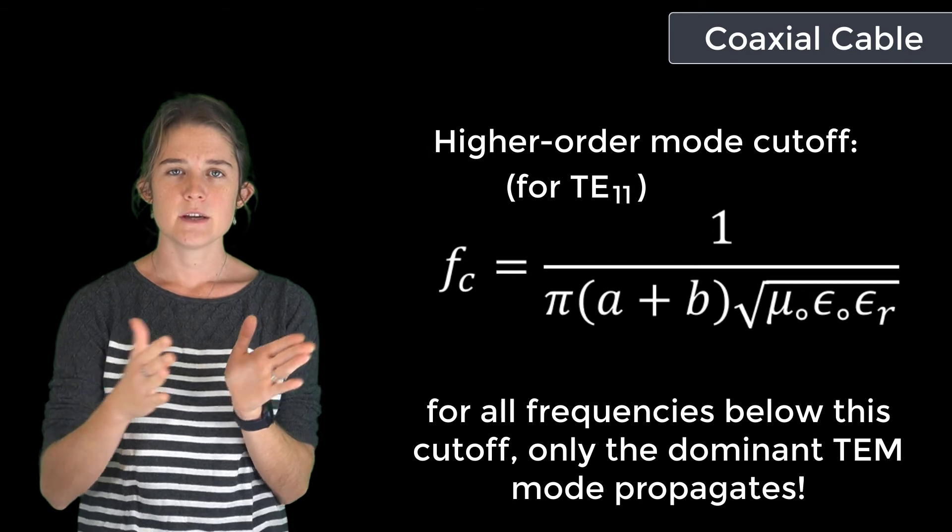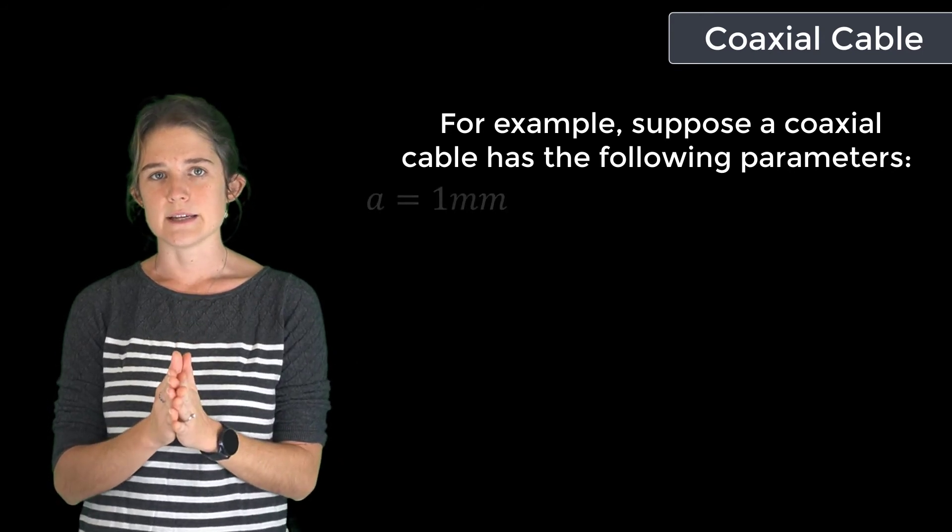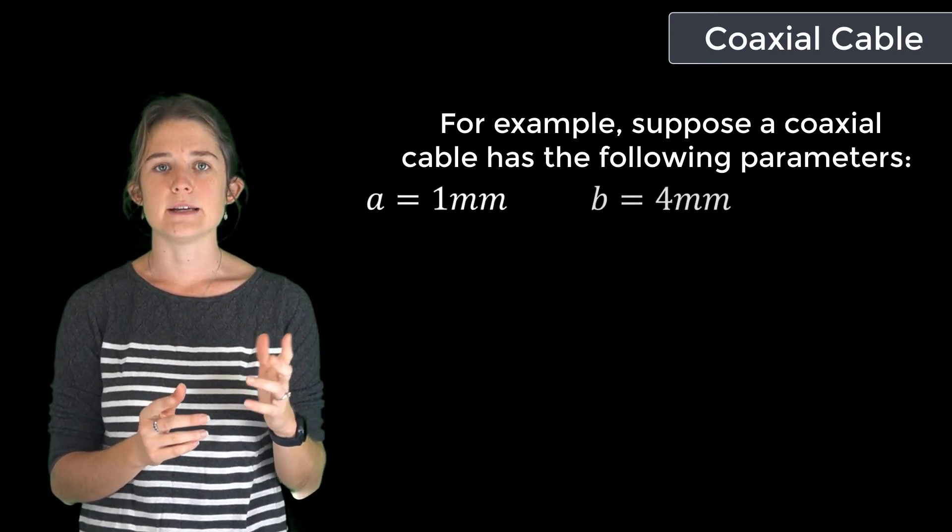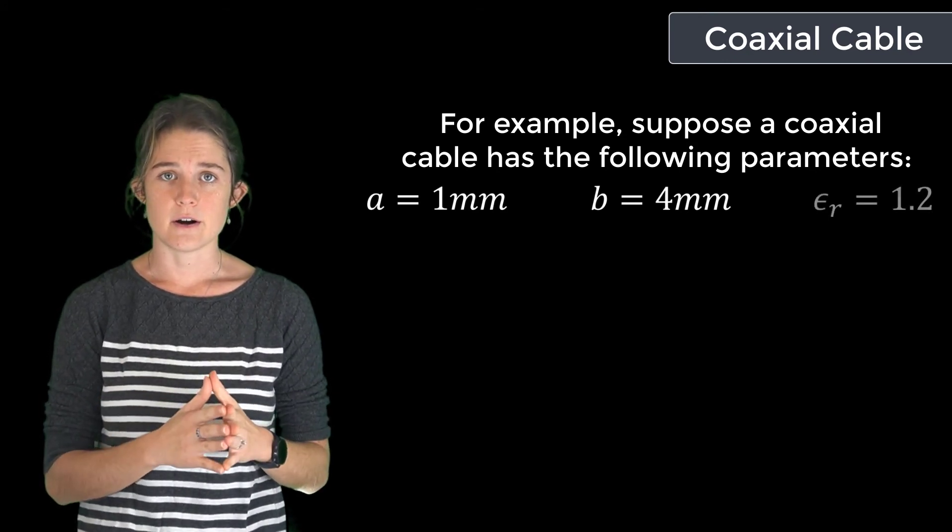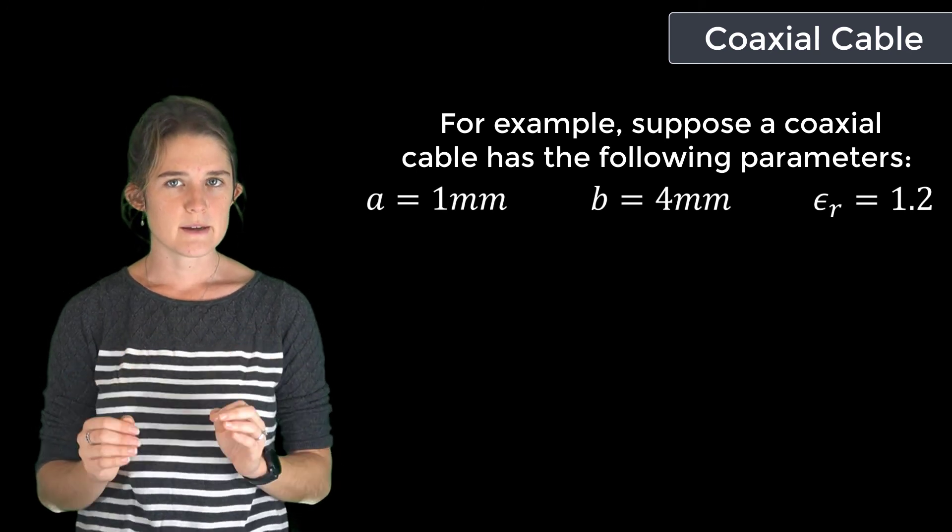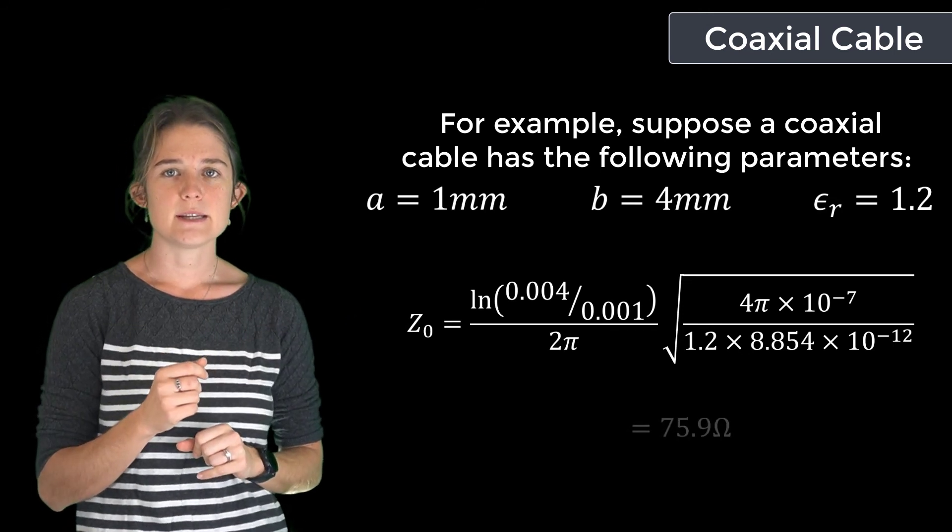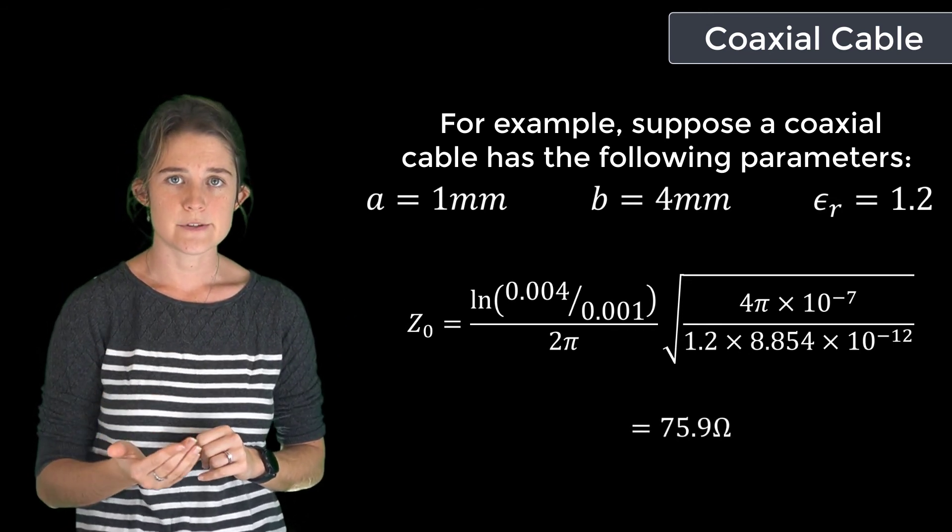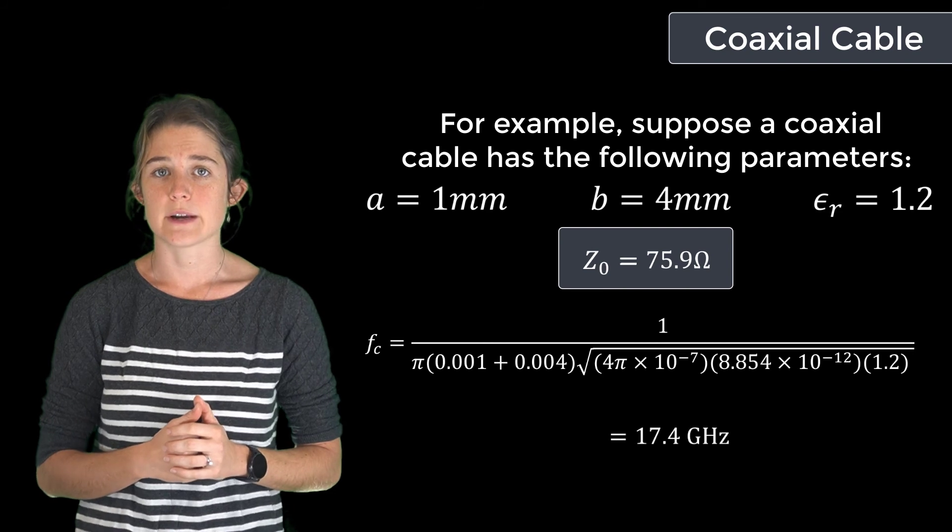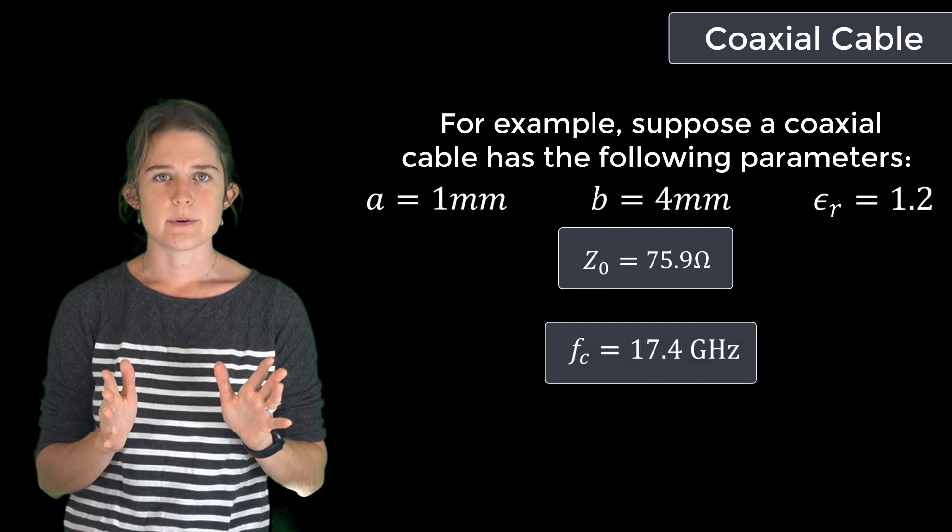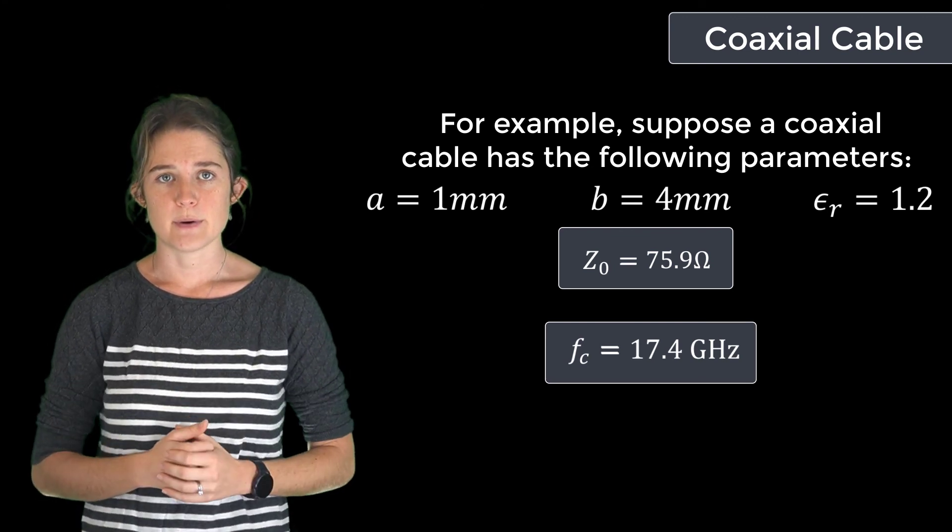So as an example, suppose we wanted to analyze the performance of a coaxial cable where the inner radius a equals 1 millimeter and the outer radius b equals 4 millimeters, and where the dielectric constant epsilon r equals 1.2. If we plug these values into our equation for the characteristic impedance of the TEM mode, we find that the characteristic impedance of this line is 75.9 ohms. We can also calculate the cutoff frequency of the TE11 mode, which is 17.4 gigahertz. So as long as this line is being operated at frequencies below 17.4 gigahertz, there is no possibility of higher order mode propagation.